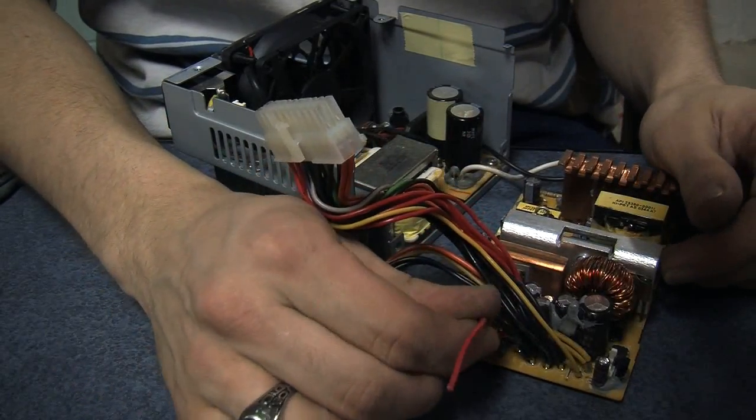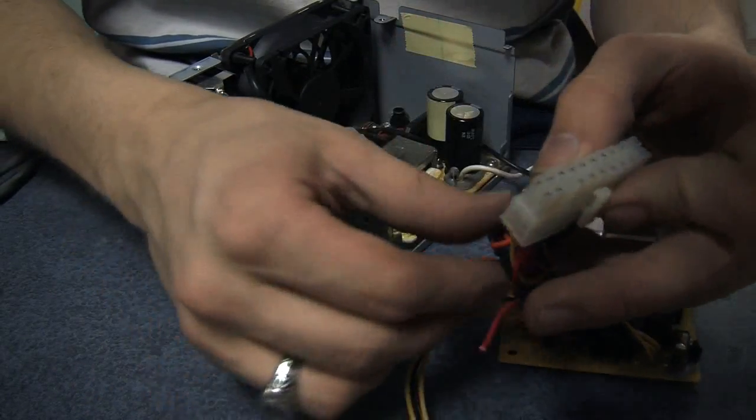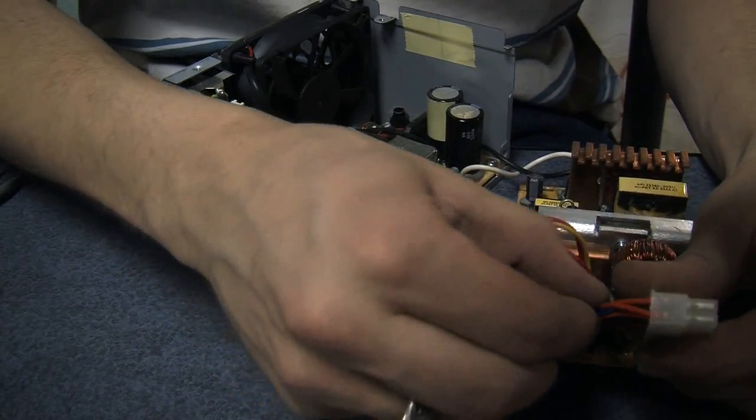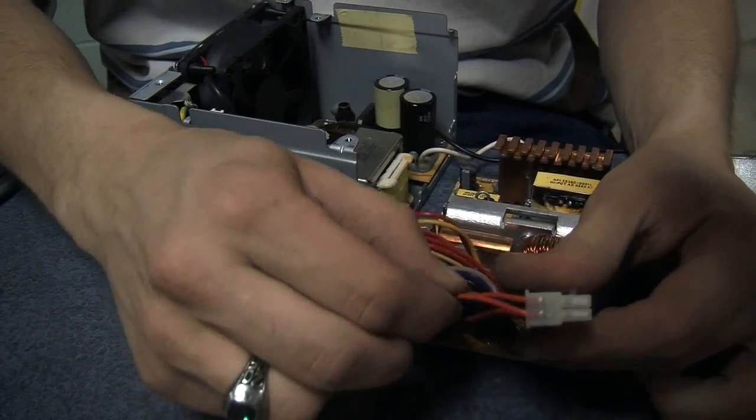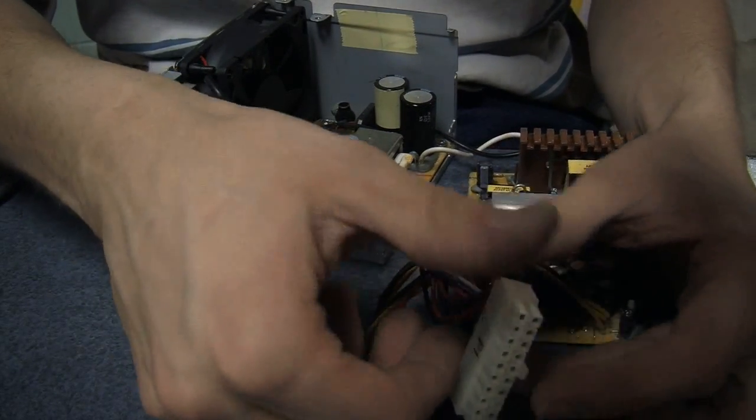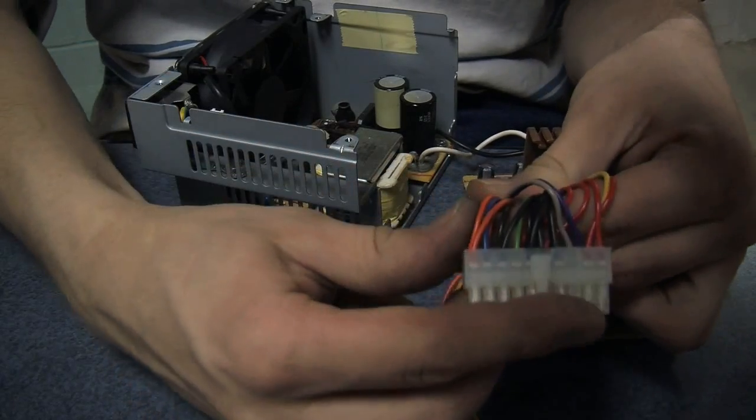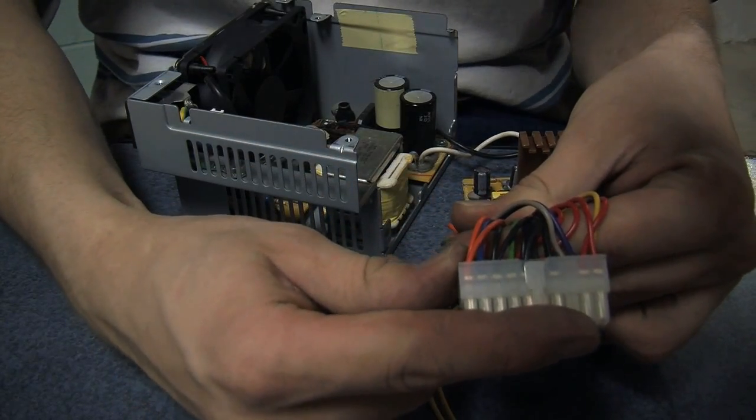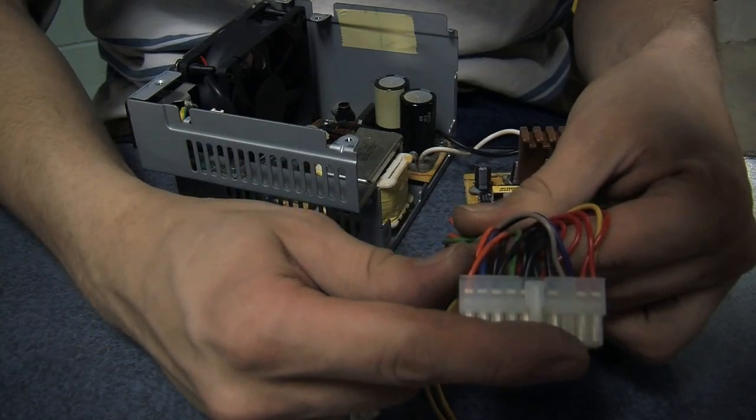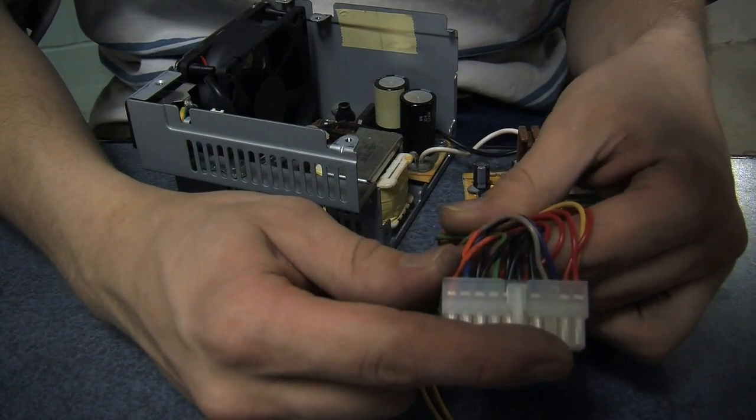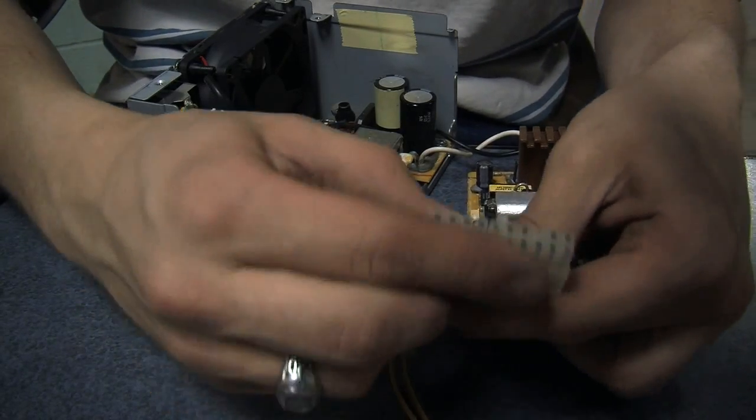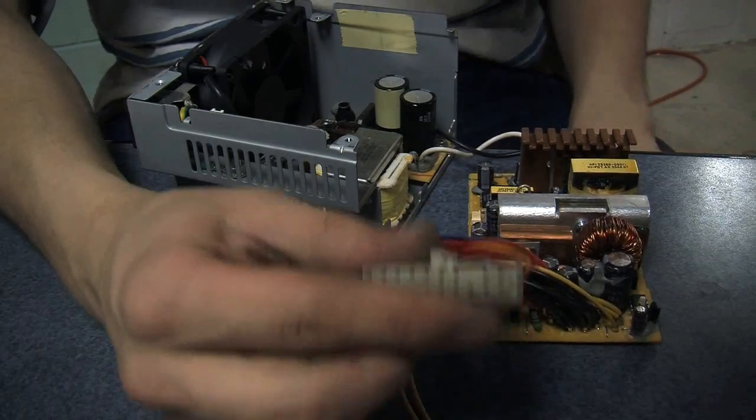Black is the ground for all of the voltages. Yellow is 12 volts. Red, here is one, is 5 volts. Orange, which is only on the motherboard connector, is 3.3 volts. And the rest of them in there, there is a handful of colors. We have purple, gray, blue and green are used to control the power supply and indicator lights to tell the motherboard if it is on.